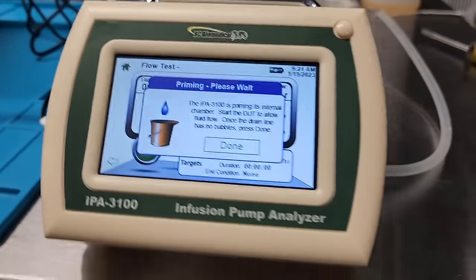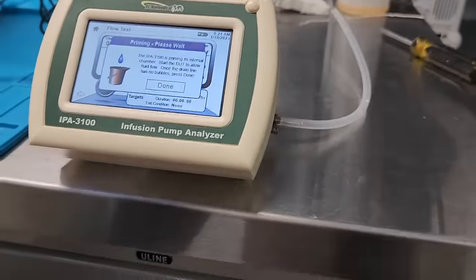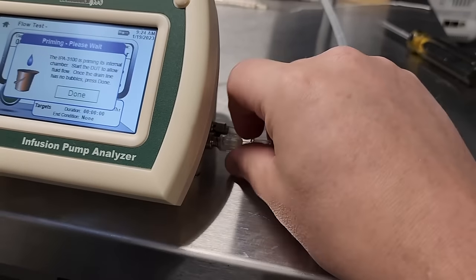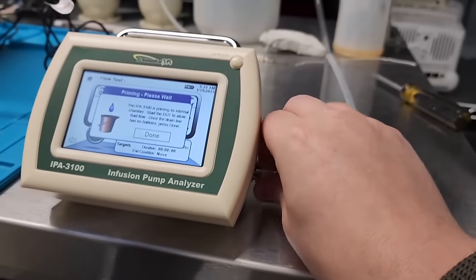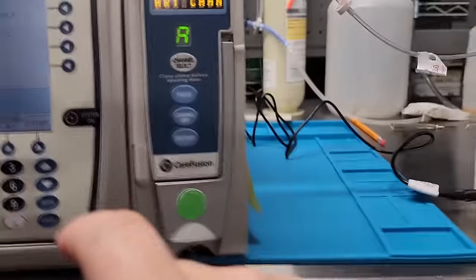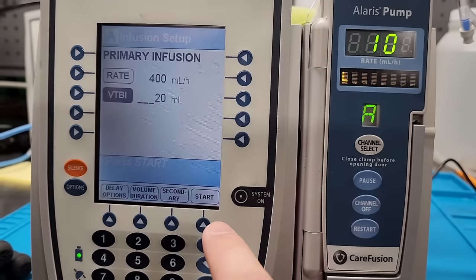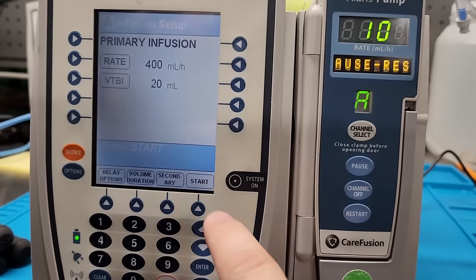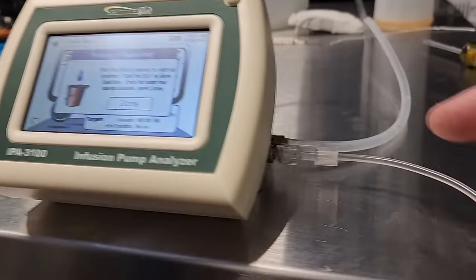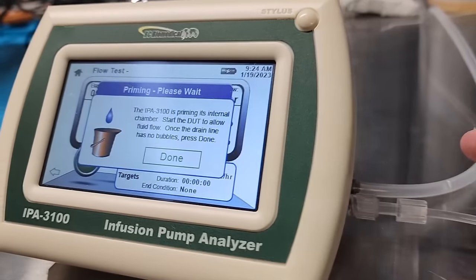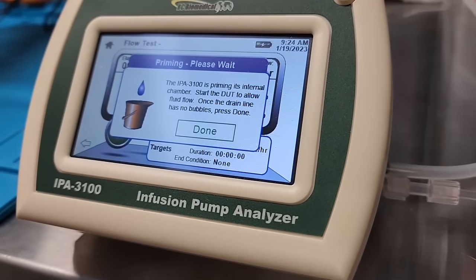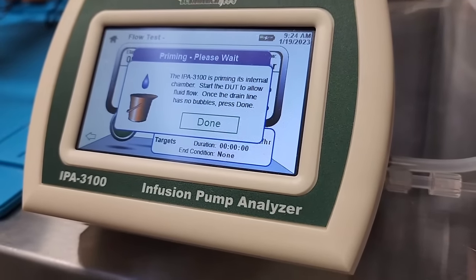It says it's going to prime, so let's go ahead and connect our infusion set right here. There we go. Luer locks. Drain tube is connected. So what it wants us to do is to prime it. We go ahead and hit start, and that shuts this guy up. Meanwhile, it says it's priming its internal chamber. Start the device under test to allow fluid flow. Once the drain line has no bubbles, press done.